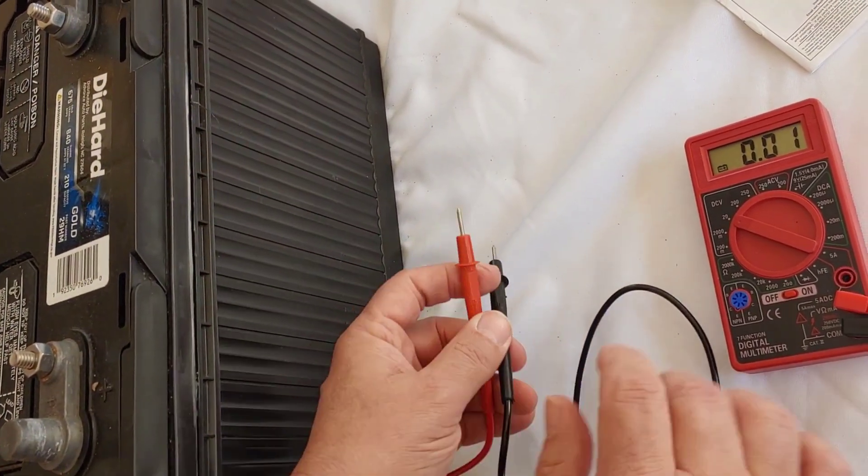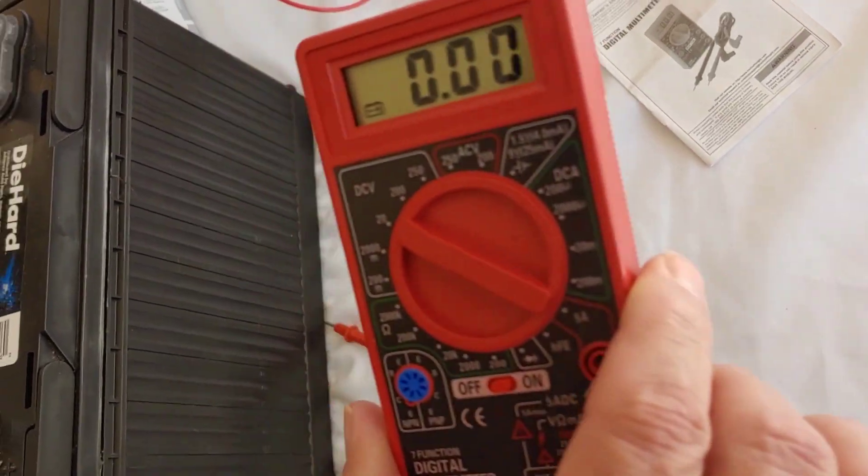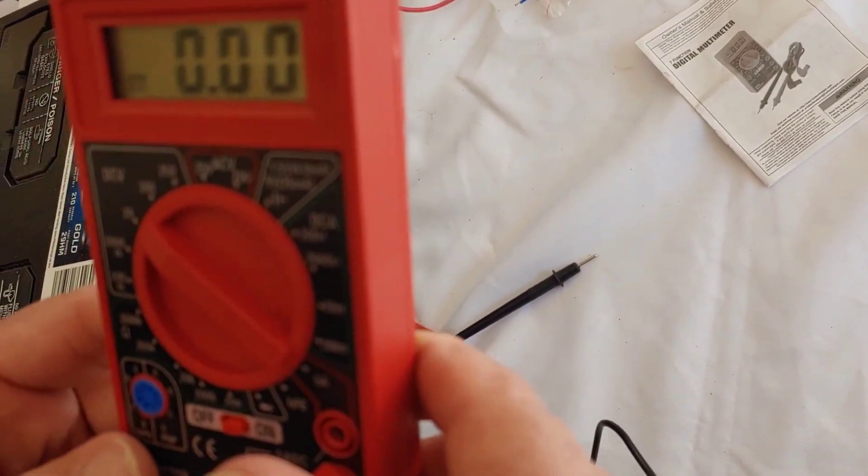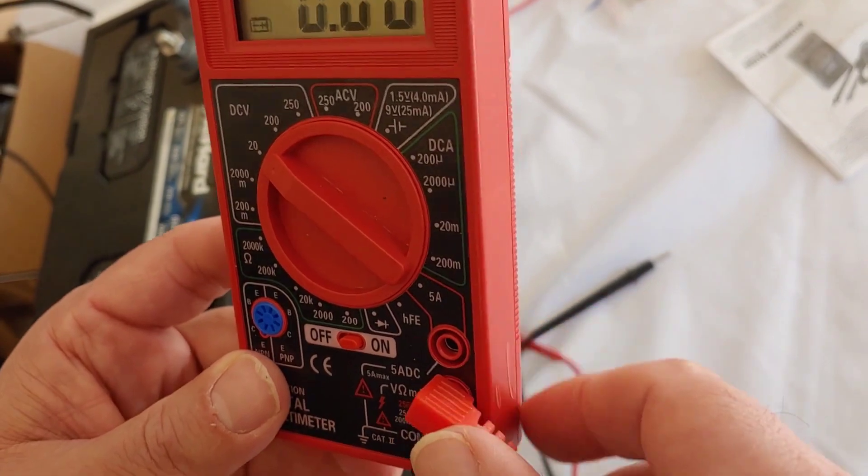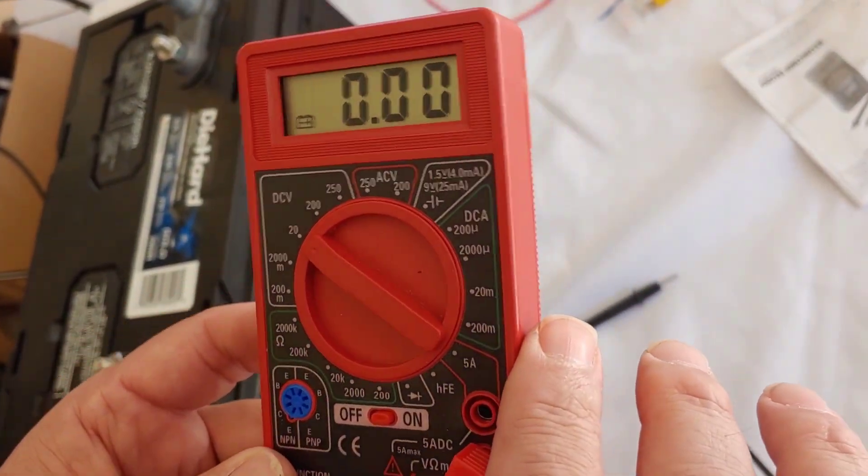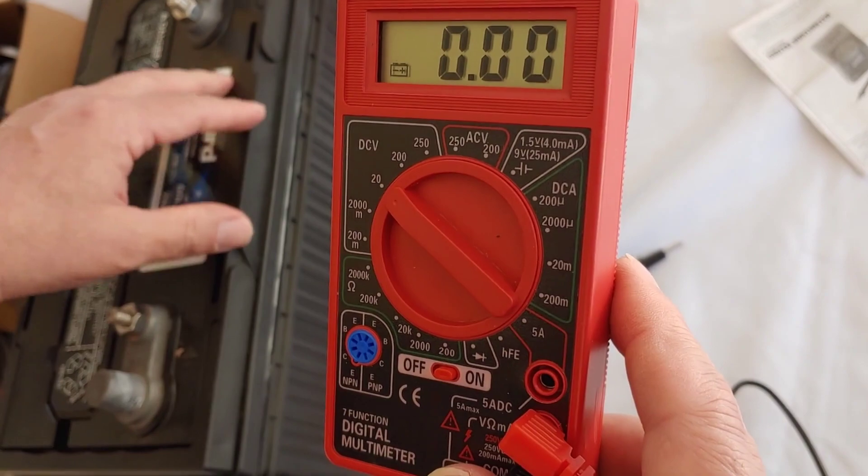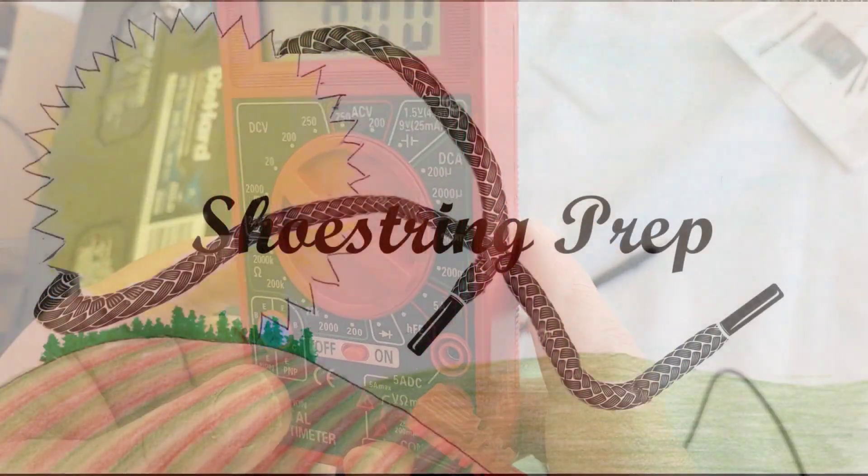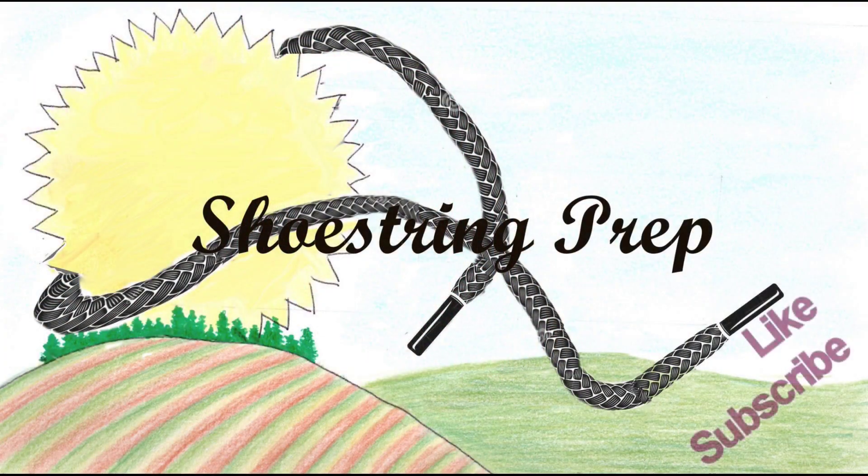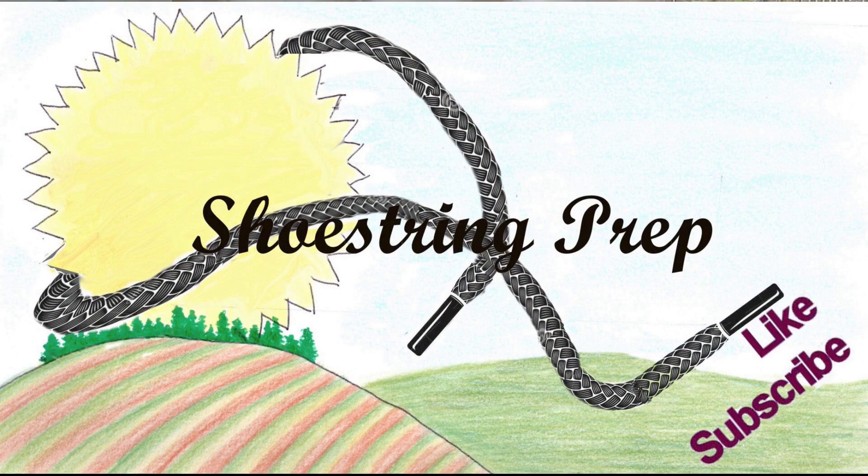And those are the basic functions of a multimeter when it comes to solar. If you have any questions, any of the other functions, I can explain them to you, but they won't really matter much when it comes to solar. But if you have any questions, put them down in the comments. I'll be more than happy to answer them for you. If you like this type of video, please subscribe and like it. And shoestring out.